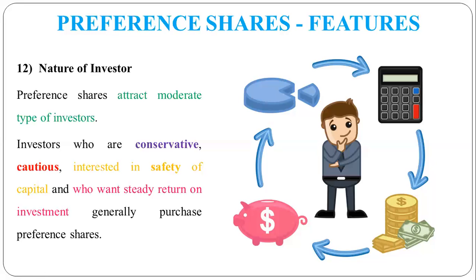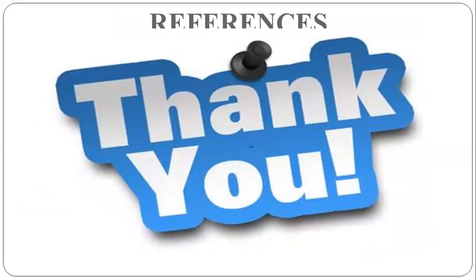In summary, equity shares and preference shares are opposite to each other. The benefits of equity shareholders — like bonus shares, right issue, and voting rights — are not available to preference shareholders. And some benefits that preference shareholders have — like assured dividend and capital repayment — are not guaranteed for equity shareholders. This is a very important concept from your exam point of view. You can get a long answer, a short note, or a distinguish question on this topic. Thank you students — please like, share, comment, and subscribe to my YouTube channel, and recommend it to your friends. We will meet in the next video.